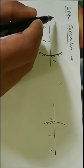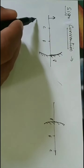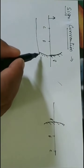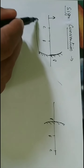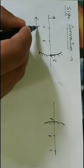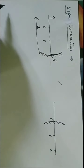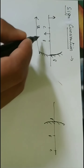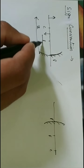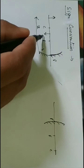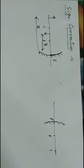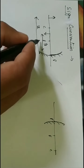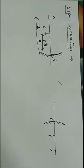Suppose my object is here. The distance of this object is known as the object distance, and it is represented by U. The image is formed here, and this distance is known as the image distance, which we generally represent by V.